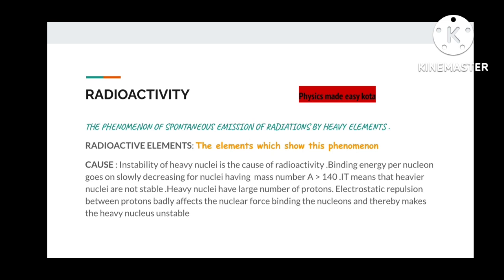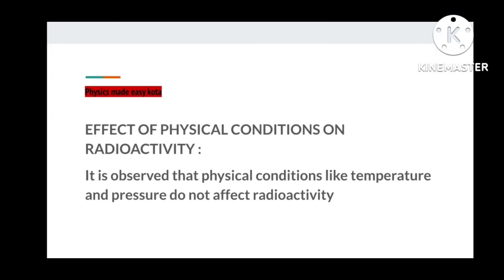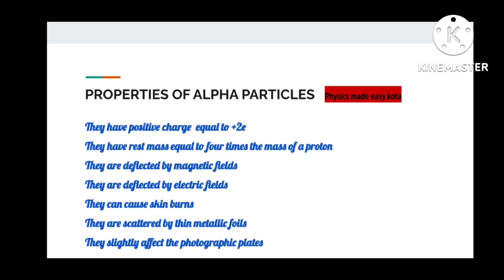It makes the heavy nucleus unstable. Electrostatic repulsion has a great impact in making the instability of the heavy nuclei. But the physical conditions like temperature and pressure do not affect radioactivity. During the process of radioactivity, some of the rays get deflected.